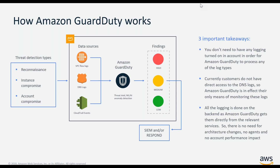All of those log sources go into the GuardDuty service where we apply the threat intelligence, the machine learning, and the anomaly detection engines. We output a finding that's like a traffic light — high, medium, or low — to give you actionable information about what activity is taking place in your account. This goes out through CloudWatch events, and through CloudWatch events you can integrate it with your partner tools, send notifications, and it's very easy to then integrate that with any other software out there.